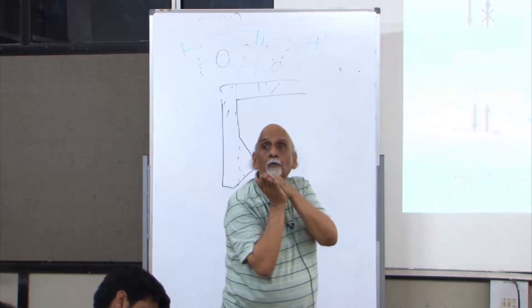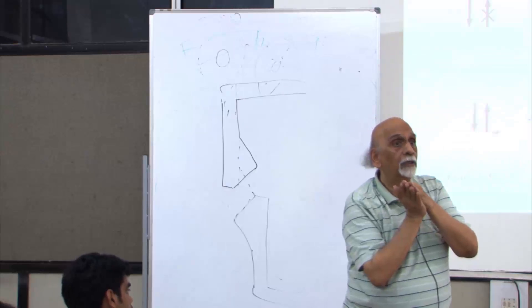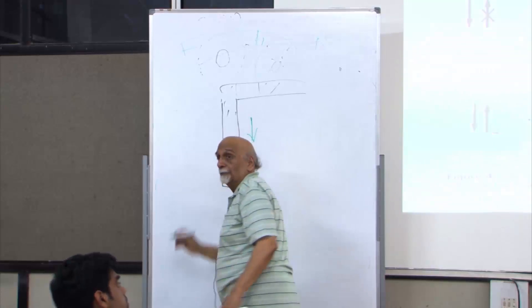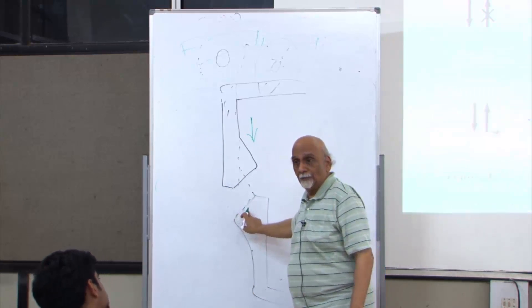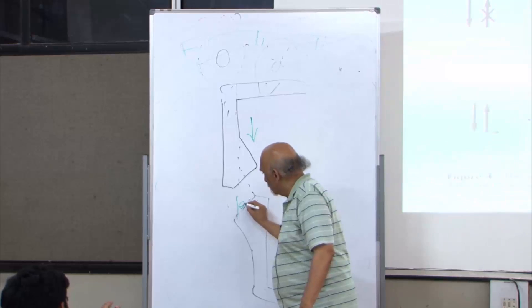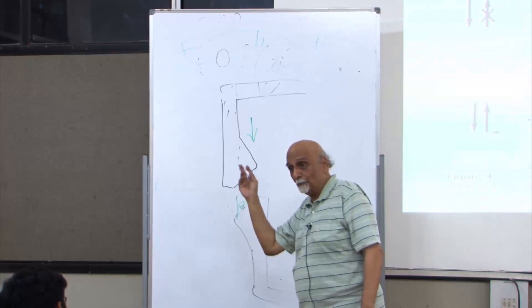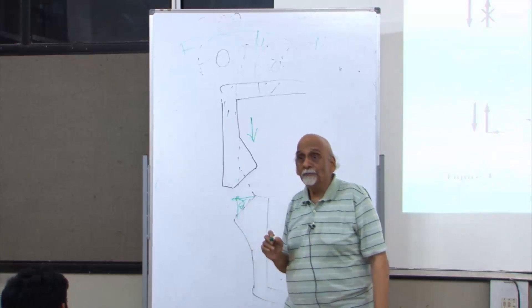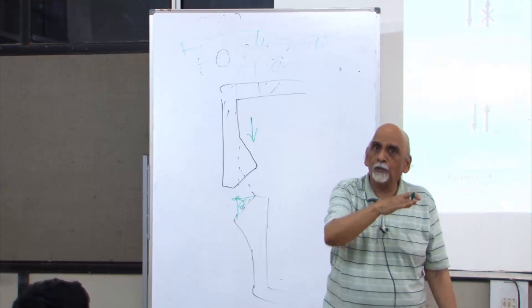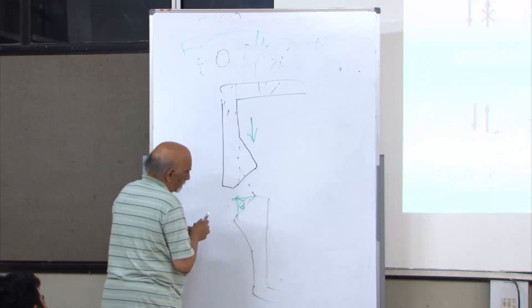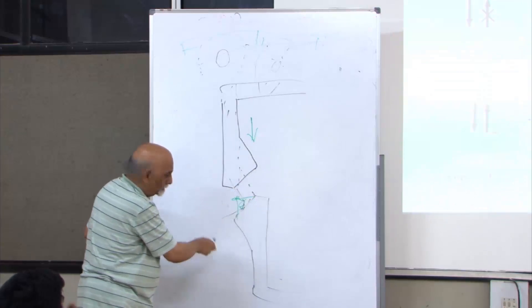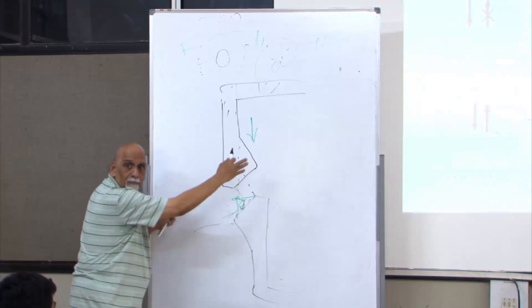When it touches here, because this angle is theta, cos theta will get converted into a horizontal component. Whatever vertical force—cos theta will become the horizontal component. So because of that, this will get deflected.